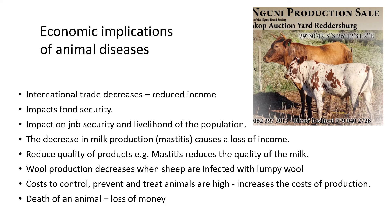Decreased milk production causes loss of income — for example, when mastitis occurs there's less milk produced and reduced quality of that milk. Wool production decreases when sheep are infected with lumpy wool. Controlling, preventing, and treating animals costs money, decreasing the farmer's income. Finally, the death of an animal means loss of money through having fewer animals to potentially sell. That is it for this lesson.